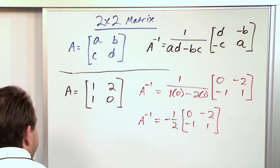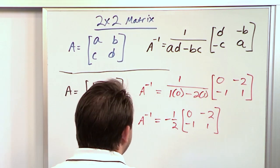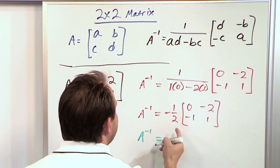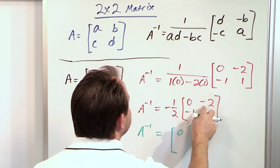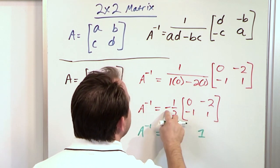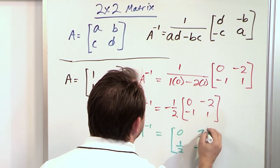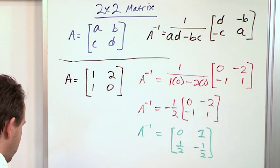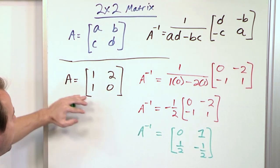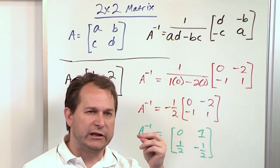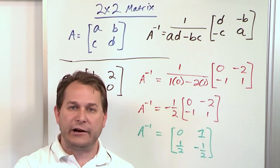Anytime you have a matrix like this with a scalar multiplied on the outside, you can just do the multiplication. Negative one half times 0 gives 0; negative one half times negative 2 gives 1; negative one half times negative 1 gives one half; and negative one half times 1 gives negative one half. So the inverse of matrix A is the matrix 0, 1, one half, negative one half. This is the answer you would circle on your exam.